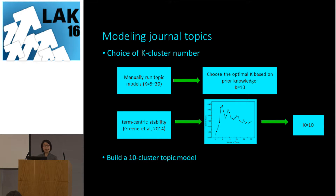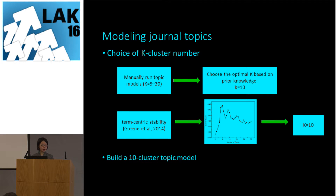We acknowledged that the manual approach might be subject to subjective bias, so we also used a computational method — term-centric stability analysis. The idea behind stability analysis is that when we repeatedly run the model by sampling from the same data, we should get similar results. Running from k equals 5 to 30, we found that when k equals 10, the stability score is the highest, which is consistent with our manual analysis.